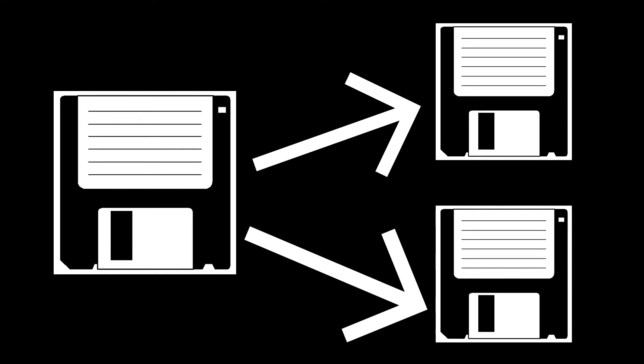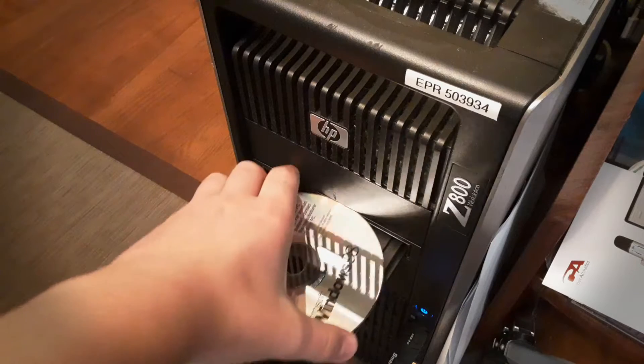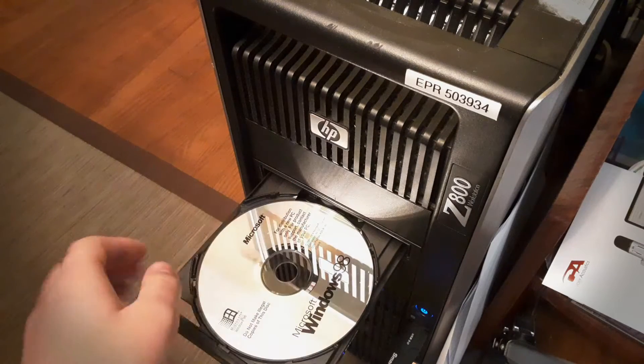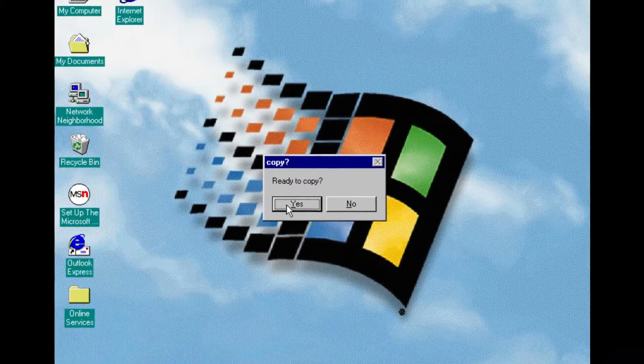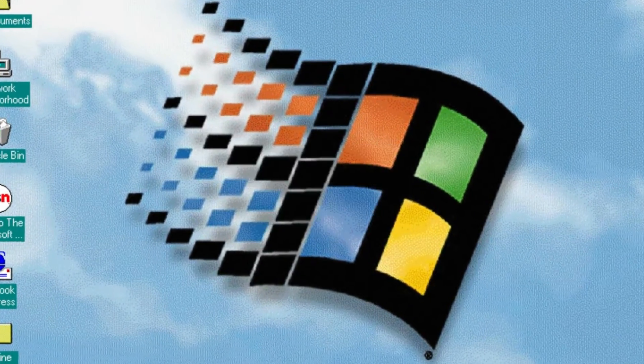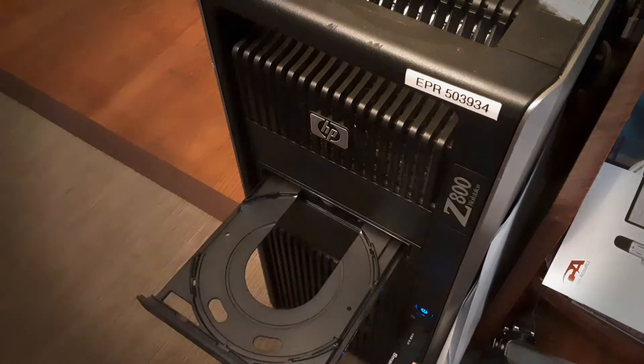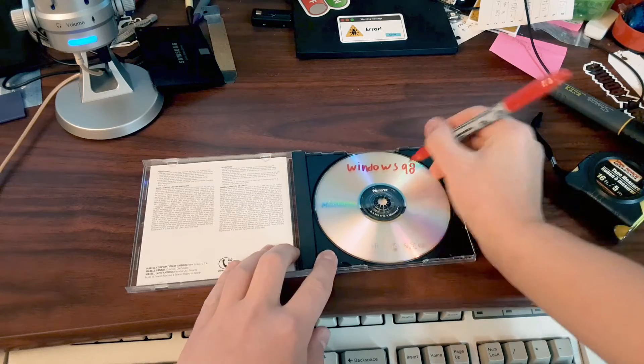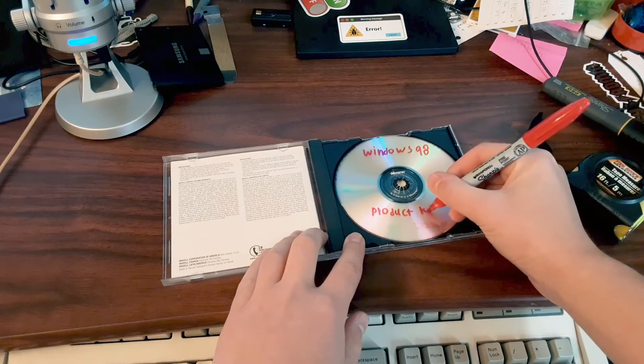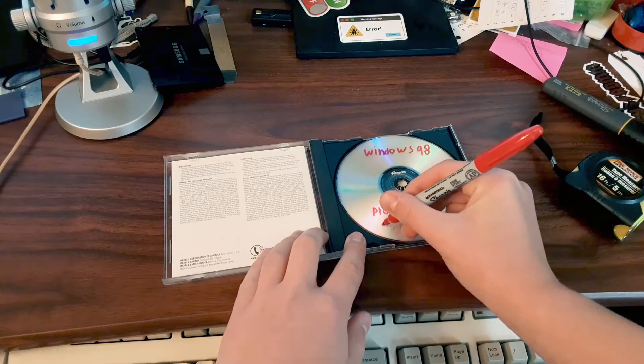Ever since the dawn of time, software developers have been making and selling software. Naturally, people have been trying to copy and avoid paying for it. This led software companies to implement measures to prevent people from making and distributing their own copies. In today's video, I'm going to be looking at some of the more notable copy protection measures — I'm not trying to condone or condemn piracy, just talk about the different anti-piracy measures that have been used over the years.